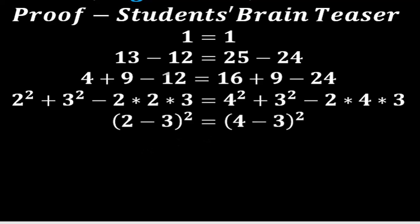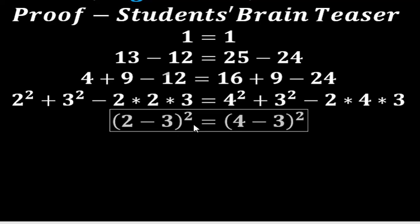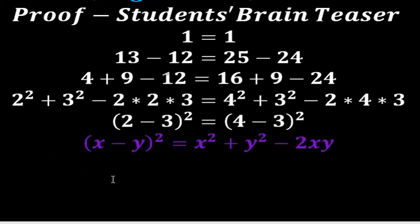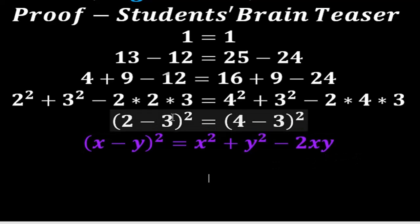Now I'm going to write the left hand side as (2 minus 3) all squared, and the right hand side as (4 minus 3) all squared. This is because of the rule: x minus y, all squared, equals x squared plus y squared minus 2xy.